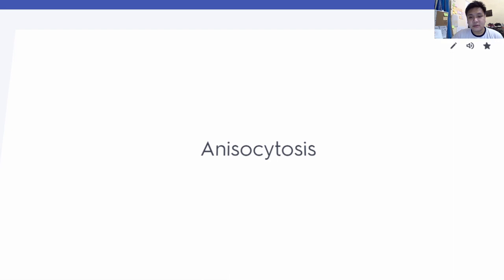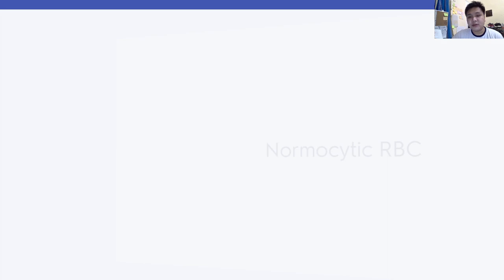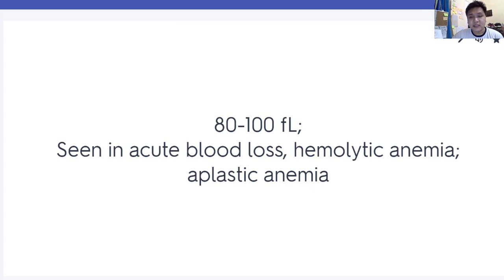Anisocytosis is variation in size. RDW (red cell distribution width) correlates with the degree of anisocytosis — normal is 11.5 to 14.5. Normocytic RBC has an MCV of 80 to 100 femtoliters, and is seen in acute blood loss, hemolytic anemia, and aplastic anemia — mnemonic: AHA.